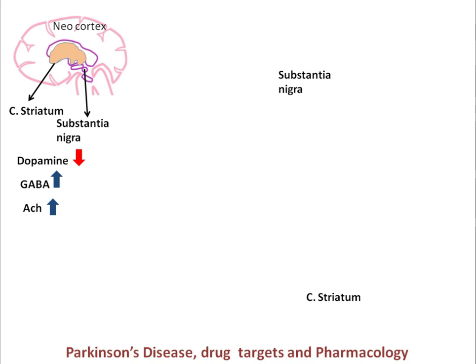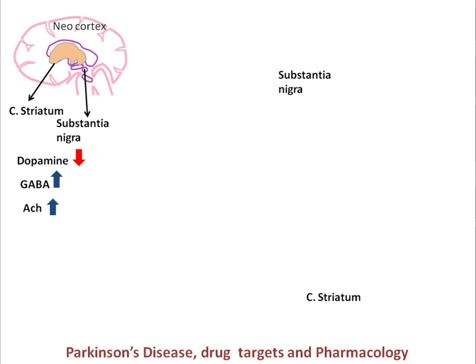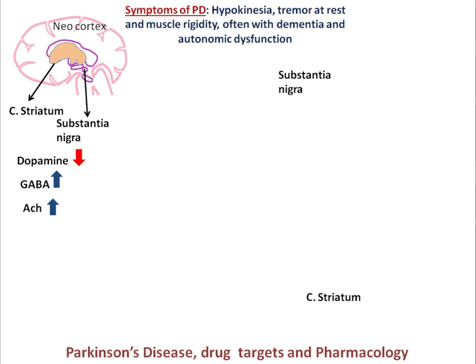GABA and acetylcholine levels in the neocortex region go high due to deficiency of dopamine. The symptoms associated with Parkinson's disease are hypokinesia, tremors at rest, and muscle rigidity, often with dementia and autonomic dysfunction.